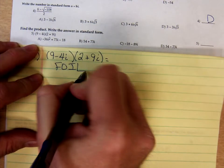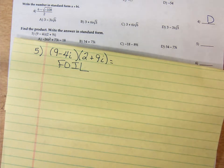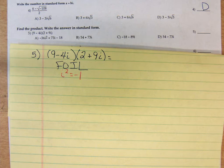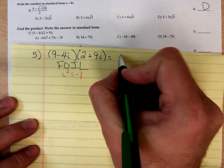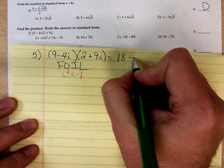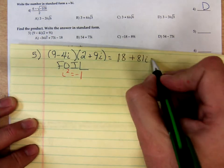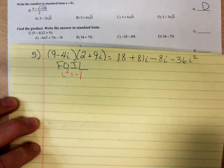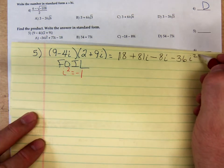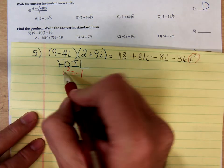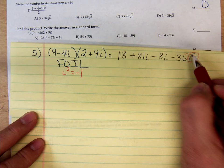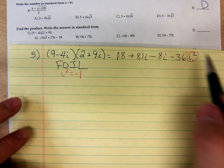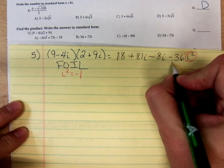And then after we foil it out, we'll use the fact that i squared is equal to negative 1. So let's see. Foiling all of this out, we'll have 18 plus 81i minus 8i and minus 36i squared. Before we start combining like terms, we've replaced the i squared with a negative 1. So we would have negative 36 times negative 1. That's a positive 36.